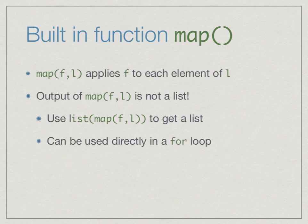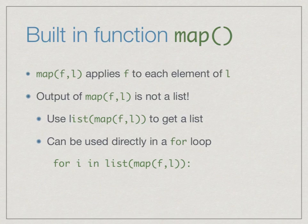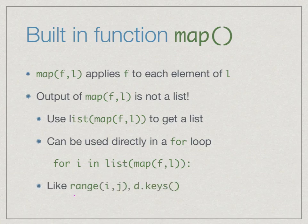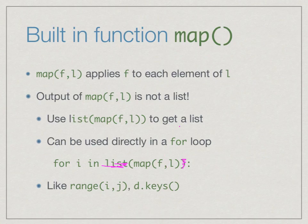You can use the output of map directly in a for loop by saying for i in map(f, l) — you don't need the list notation if you just want to iterate. But if you want to use it as a list, you must use the list function to convert it. This is the same with functions like range and d.keys — these all give sequences of values that can be used in for loops, but if you want to manipulate them as lists you must use list to convert them.